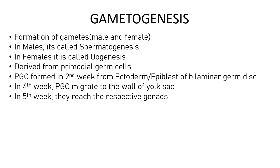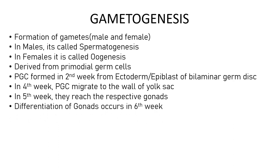In the fifth week they actually reach their respective gonads — if it's in males they reach their respective sides, and if it's in females they reach their respective sides. Then differentiation of these gonads occurs in the sixth week. Initially they are unipotent cells which haven't yet differentiated, but in the sixth week of embryonic development they differentiate into either spermatogonia or oogonia.